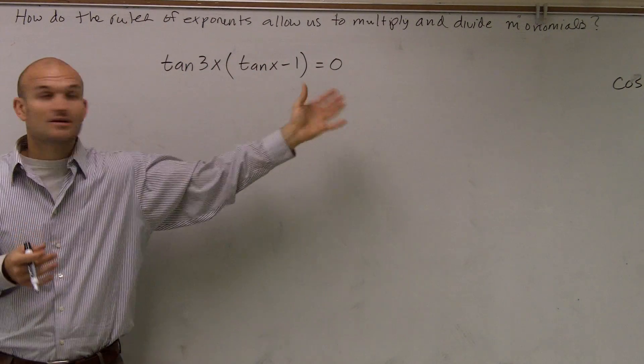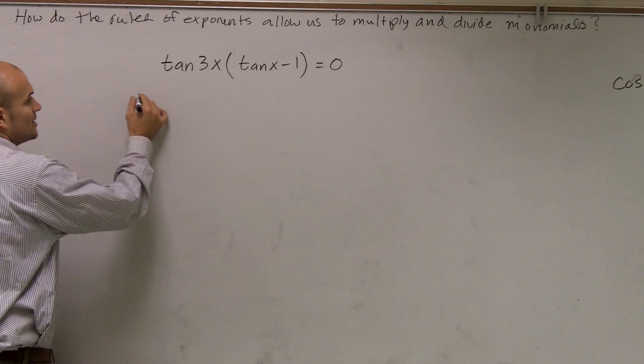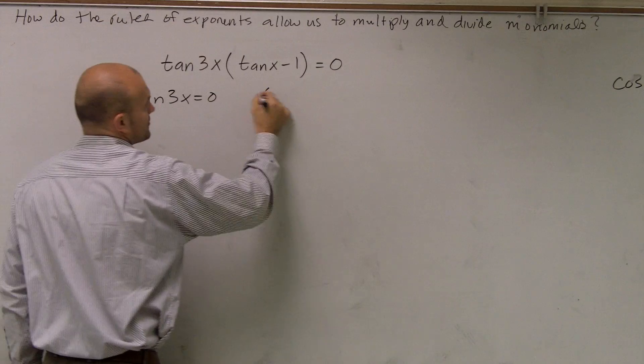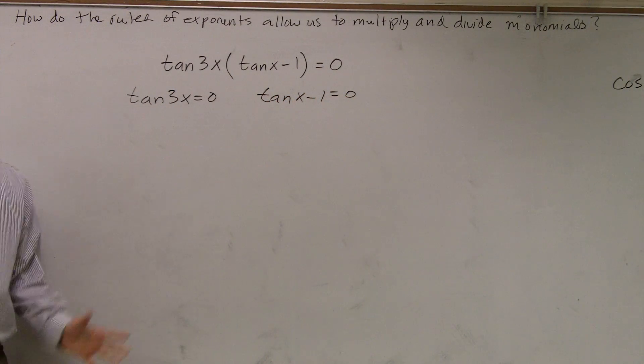Here we already have this kind of factored out. So since I have these two terms multiplied equals 0, I can set them out saying tan(3x) equals 0, and tan(x) minus 1 equals 0. Everybody follow me with that, right? Yes. OK, all right.